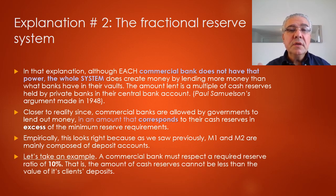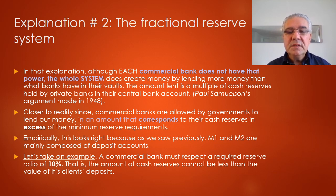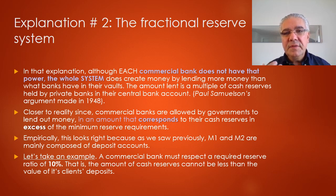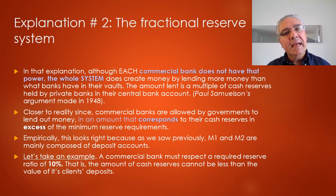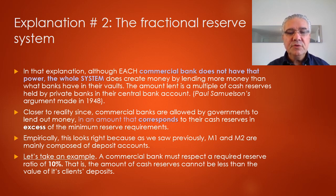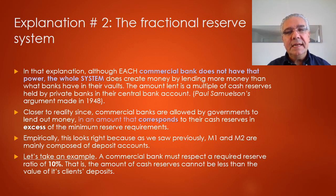We're going to look at an example of a commercial bank that must respect a required reserve ratio of 10%. That means they can extend loans, but every time they extend loans they have to have 10% of the value of that loan as cash reserves. Thank you for your attention and let's move on to the next slides.